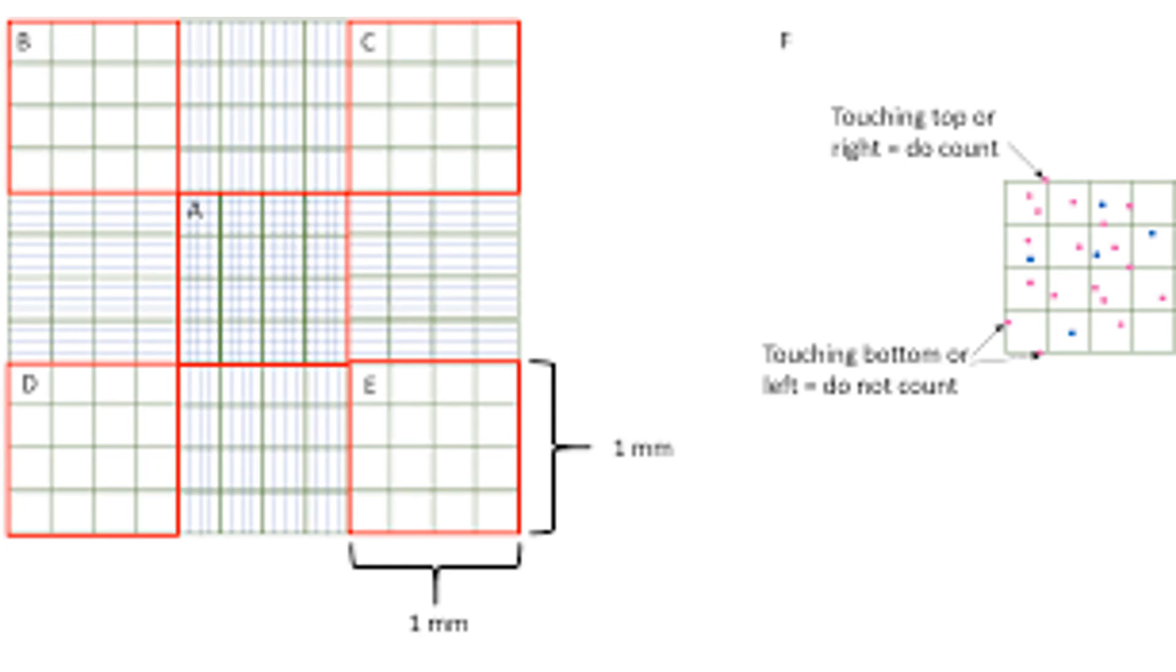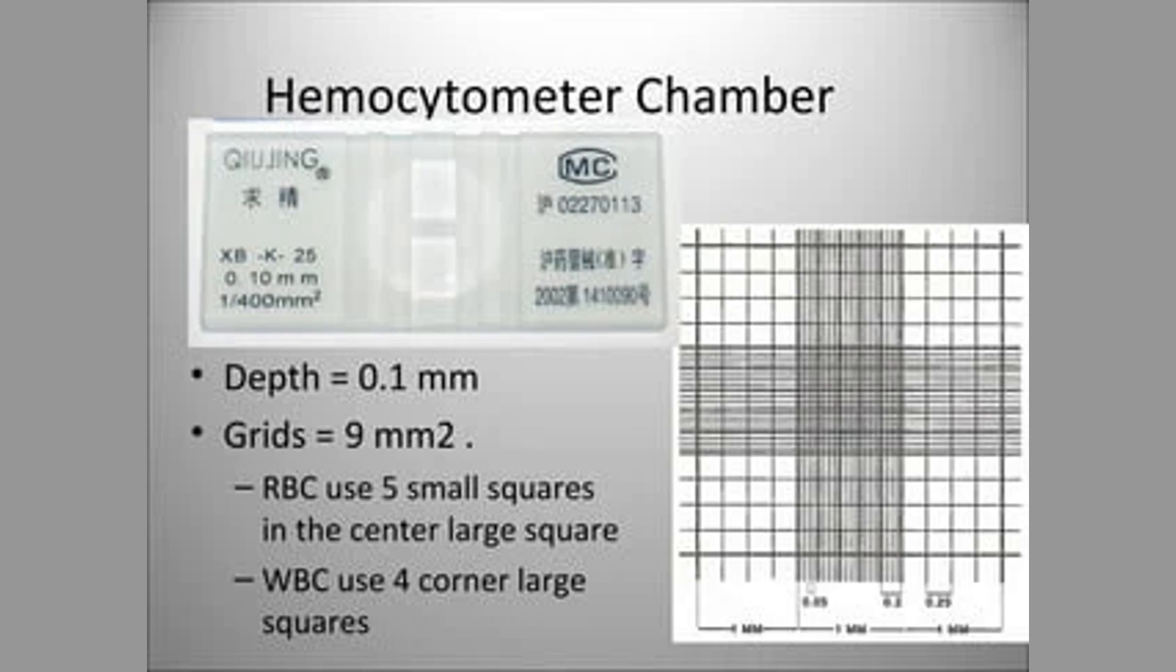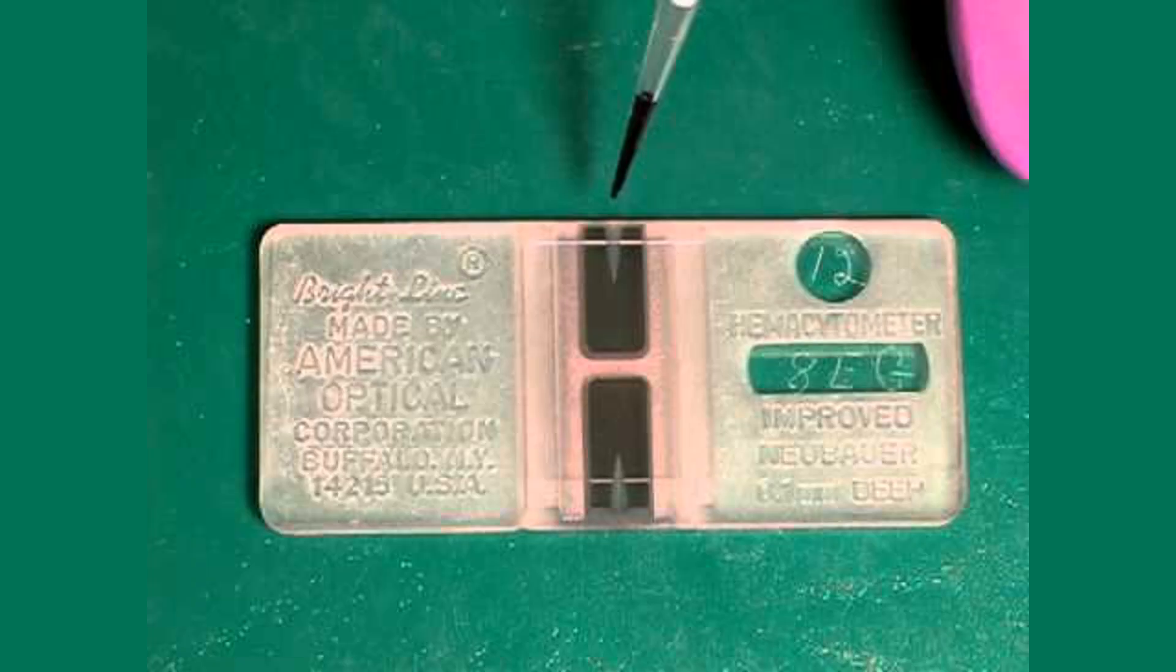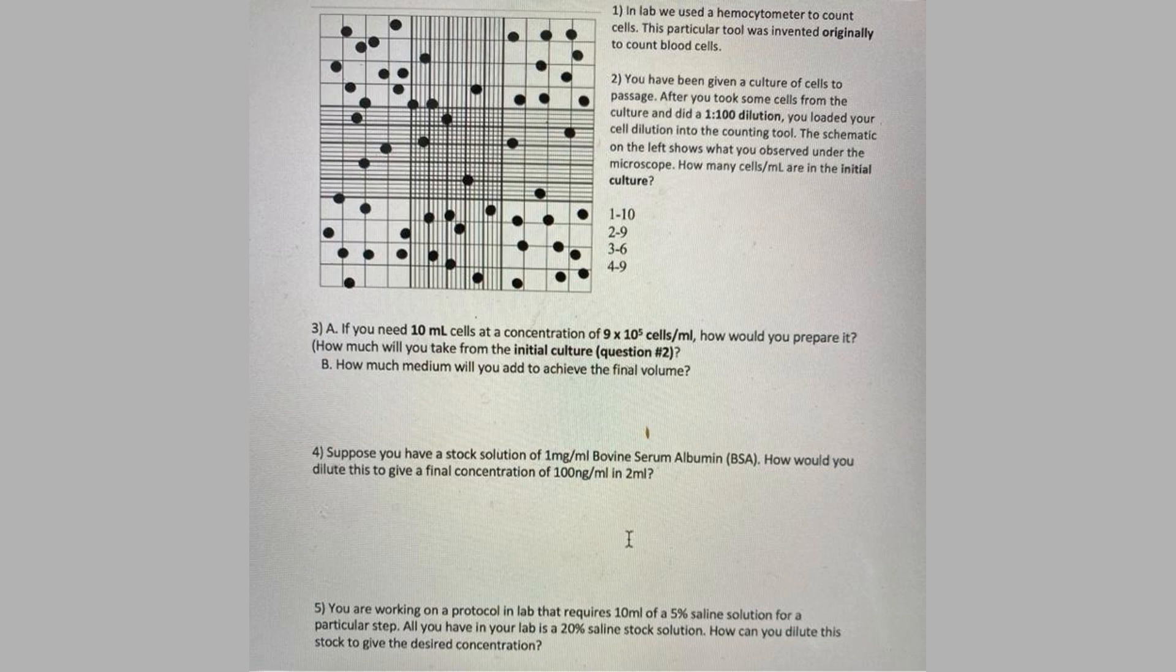Sample loading: To use a hemocytometer, a known volume of the cell suspension is carefully placed in a chamber created by covering the grid area with a specially designed coverslip. The coverslip creates a defined depth for the fluid, allowing for accurate cell counting.